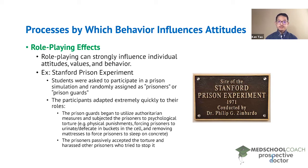One of the most famous examples demonstrating this is the Stanford prison experiment, which is highly controversial. In this study, students were asked to participate in a prison simulation and were randomly assigned as prisoners or prison guards. The study conductors found that the participants adapted extremely quickly to their roles.